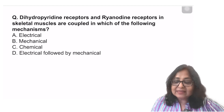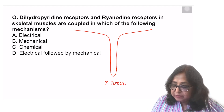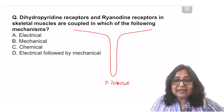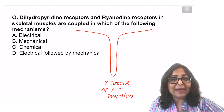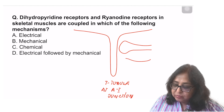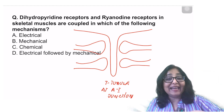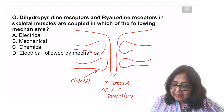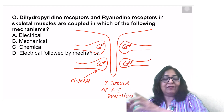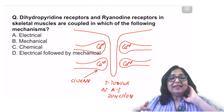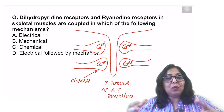Dihydropyridine receptors and ryanodine receptors in skeletal muscles are coupled by which of the following? The sarcolemma dips into the muscle fiber to form the T-tubule. In skeletal muscle, this T-tubule is at the A-I junction — the junction of the A-band and I-band. On either side of the T-tubule you have the L-tubule, which is the sarcoplasmic reticulum. The ends of the sarcoplasmic reticulum are dilated to form cisterns, which are the storehouse of calcium. The cistern-T-tubule-cistern forms a triad. The advantage of the T-tubule is that the action potential reaches right into the interior of the muscle fiber, giving a well-coordinated contraction.